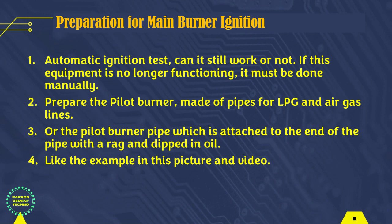Step 1: Test the automatic ignition — can it still be used or not? If this equipment is no longer functioning, it must be done manually. Step 2: Prepare the pilot burner, made of pipes to drain natural gas and air to regulate air pressure. Step 3: Or a pilot burner pipe with a rag dipped in diesel oil at the end. Examples are shown in the following pictures and videos.